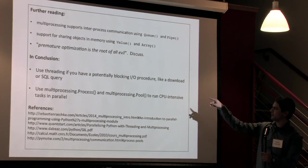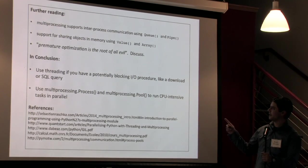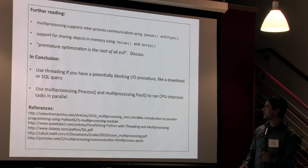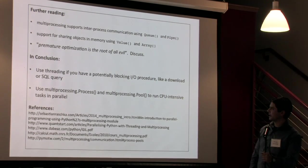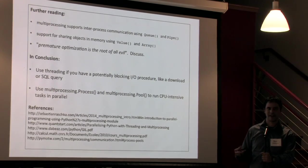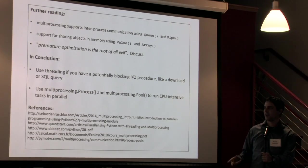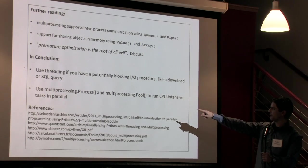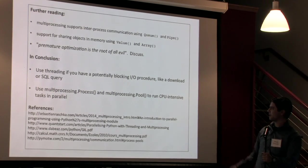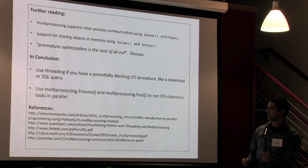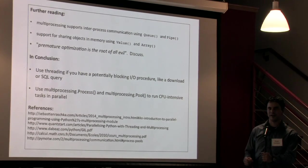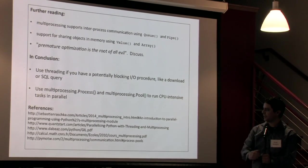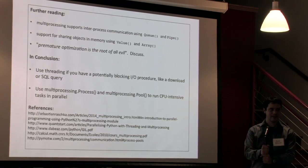So in conclusion just two simple points here. Use the threading if you have a potentially blocking IO procedure like an SQL query and that could help speed that up, allow you to do computations at the same time that's taking place and improve the time for a long process. Use this multi-processing process or preferentially this multi-processing pool if you need to run a CPU intensive task in parallel. It's very easy to use. And finally here's a few references to get you started on doing this and that's all I have. Thank you.